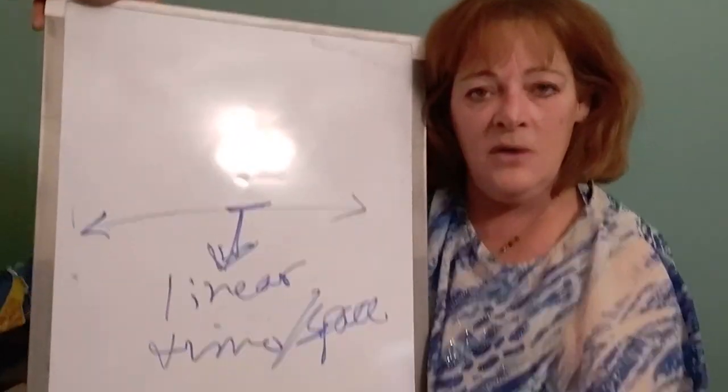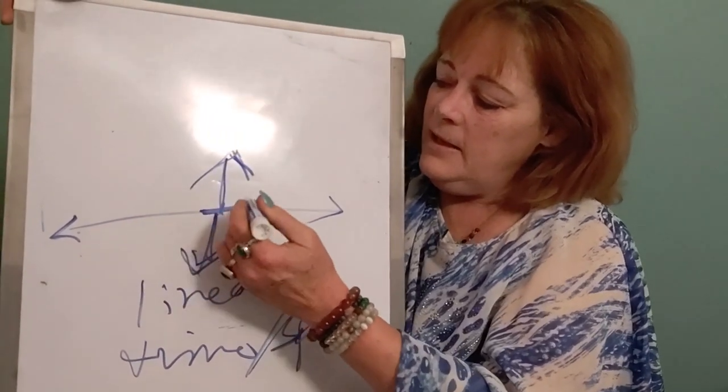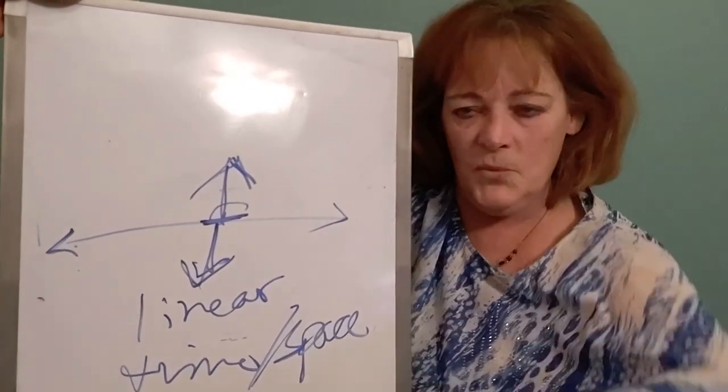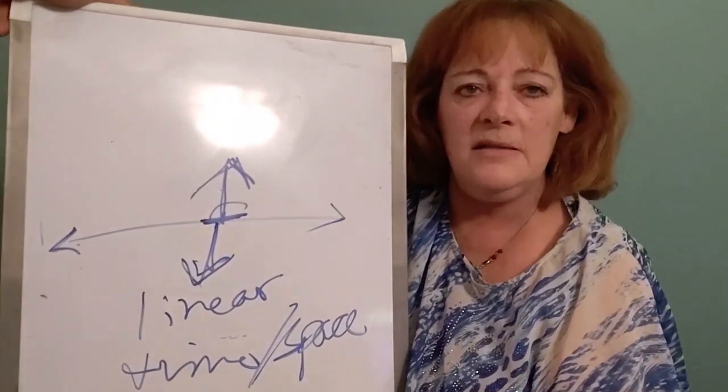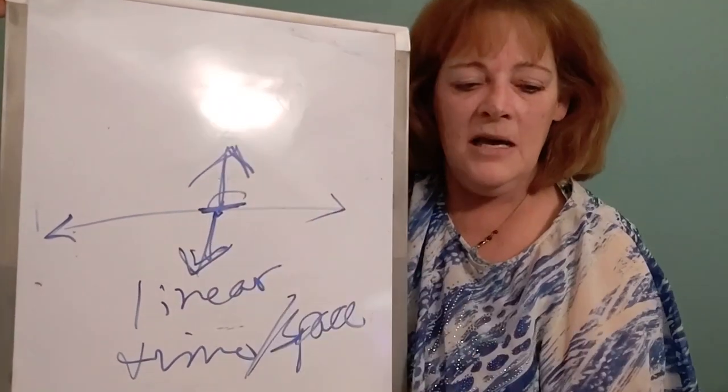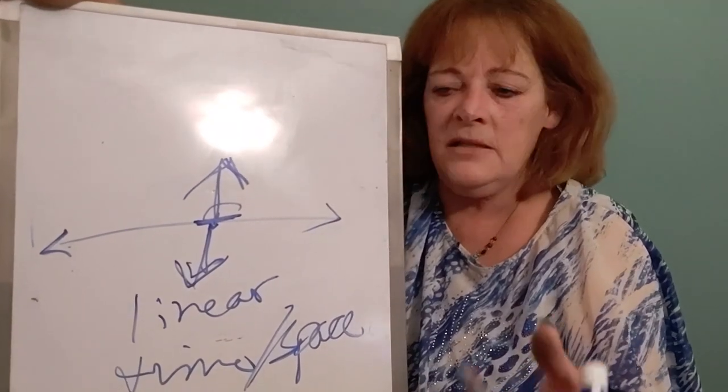And I remember going, oh yeah, I remember. And in that moment I remembered this whole game of linear time space and how it was created and why it was created and how it was used and how it could be played with, all of that and why it was all done to begin with. And then I turned around that way and in that moment I went into what I call now time, where there is no such thing as time and space.